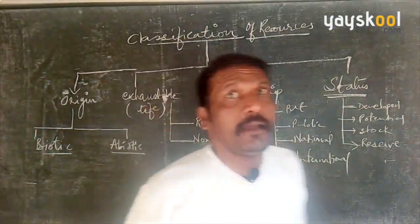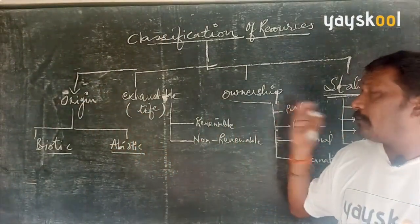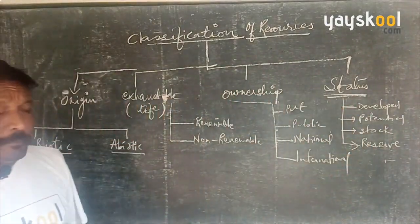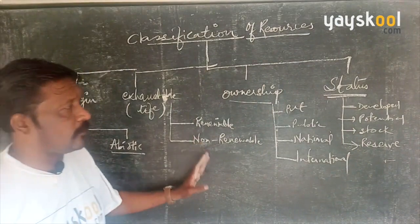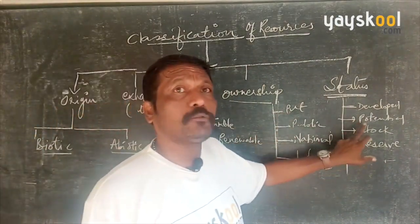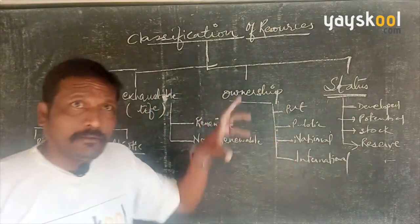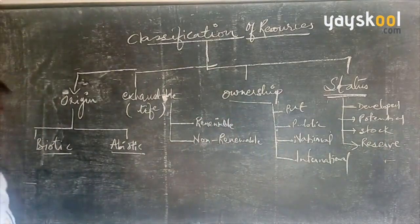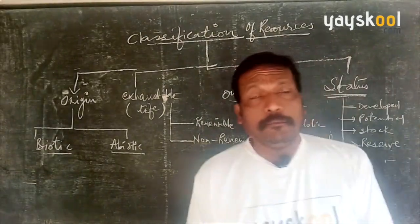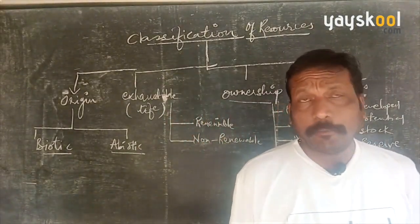To summarize: we classify resources on the basis of origin, on the basis of exhaustibility, on the basis of ownership, and on the basis of status of development. These give us biotic, abiotic, renewable, non-renewable, private, public, national, international, and finally — on the basis of status — developed, potential, stock, and reserve. We will see each of these one by one in the next session. Hope you go through this part and understand the lesson clearly, as it is very important from a future exam point of view. Thank you very much.